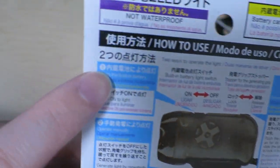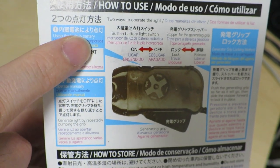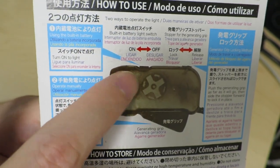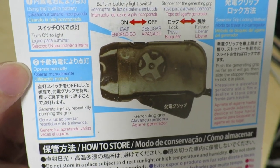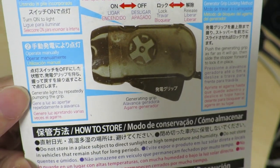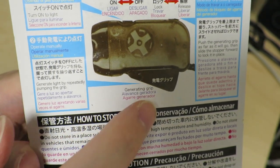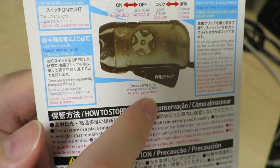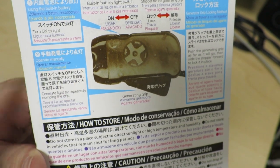Alright, so first of all, as I mentioned, it says there's a built-in battery that you can use so that you can turn on the light by using this on and off switch. Also you can operate manually by generating light by repeatedly pumping the grip. So there's going to be this little handle thing that pops out that you can press on in order to generate electricity to light the LEDs.